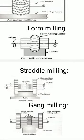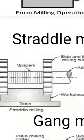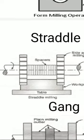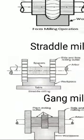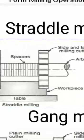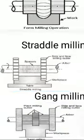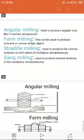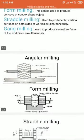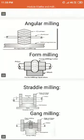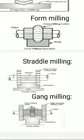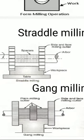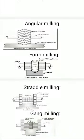Next, straddle milling. Whenever you want vertical flat surfaces on the workpiece, at that time we have to use straddle milling — these are the cutters arranged vertically. Gang milling: it can be used to produce several surfaces of the workpiece simultaneously. In only one pass, I want to make any number of operations on the workpiece — at that time you have to use gang milling. Thank you.